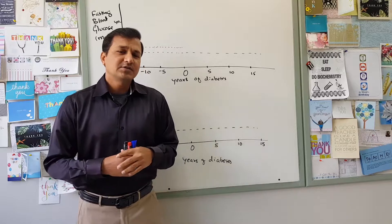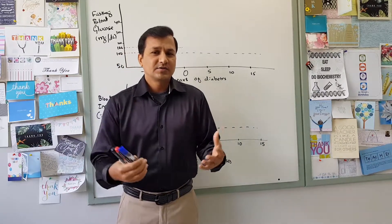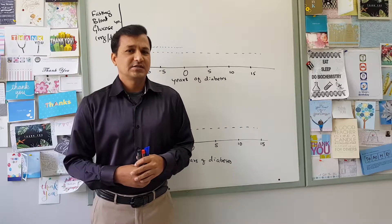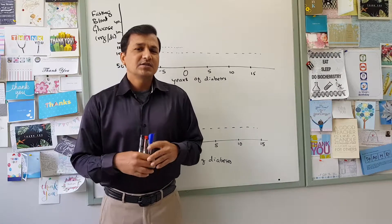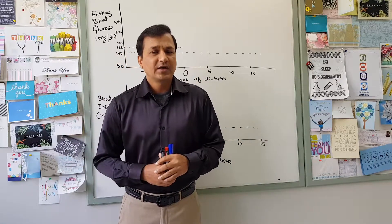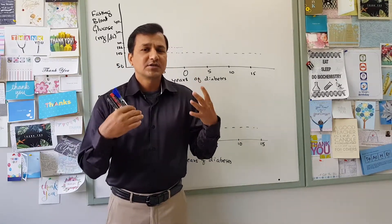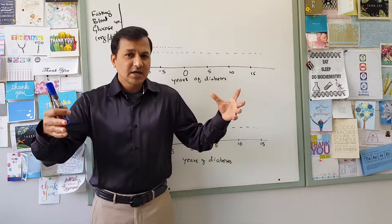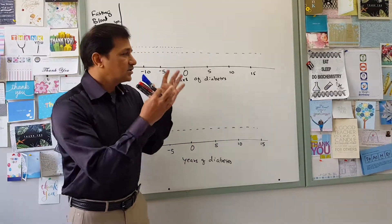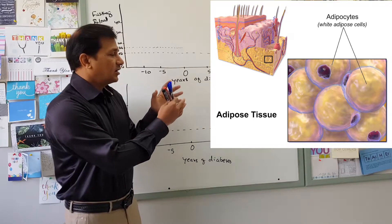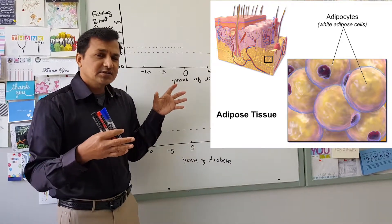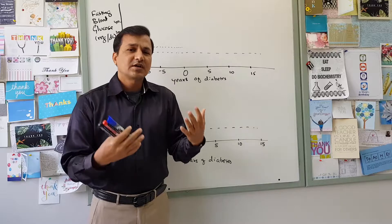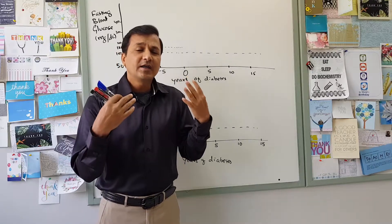Type 2 diabetes mellitus, before diagnosis, will be in pre-diabetes days. When the person puts on weight and becomes overweight or obese, the adipocyte size will increase. As shown in the figure here, as the adipocyte size increases, these adipocytes start to secrete adipokines.